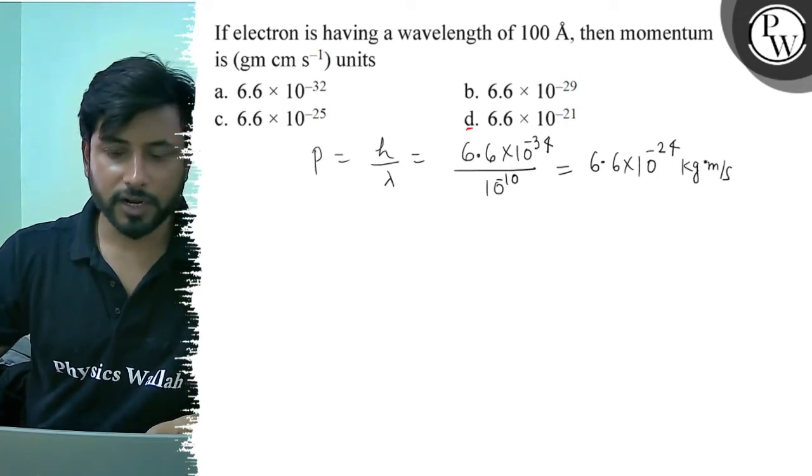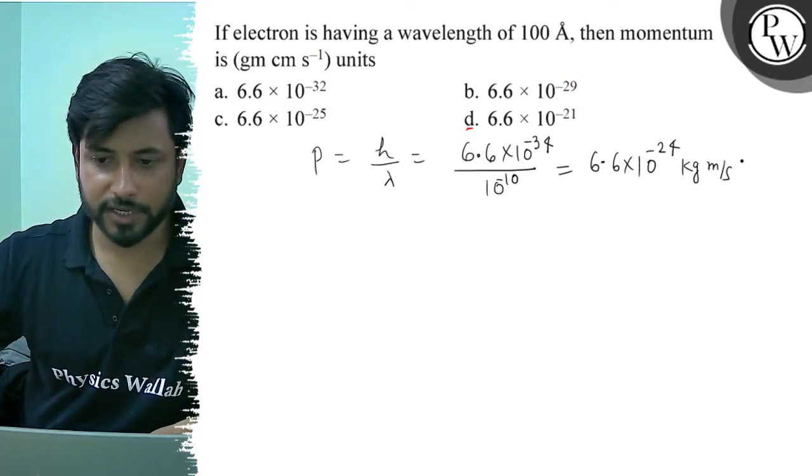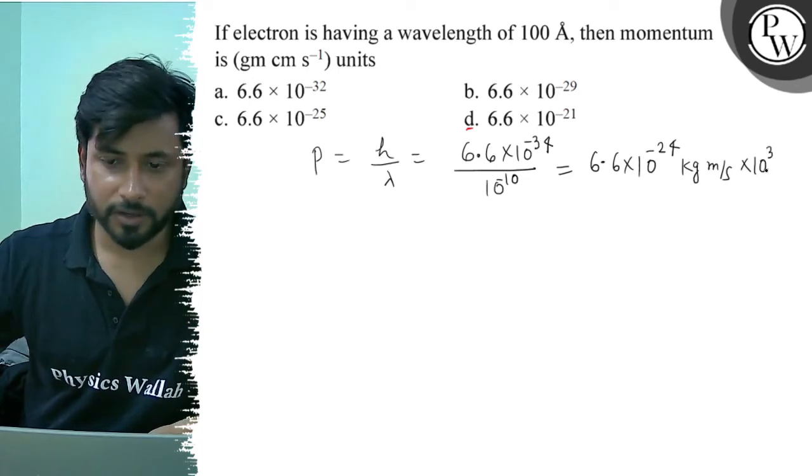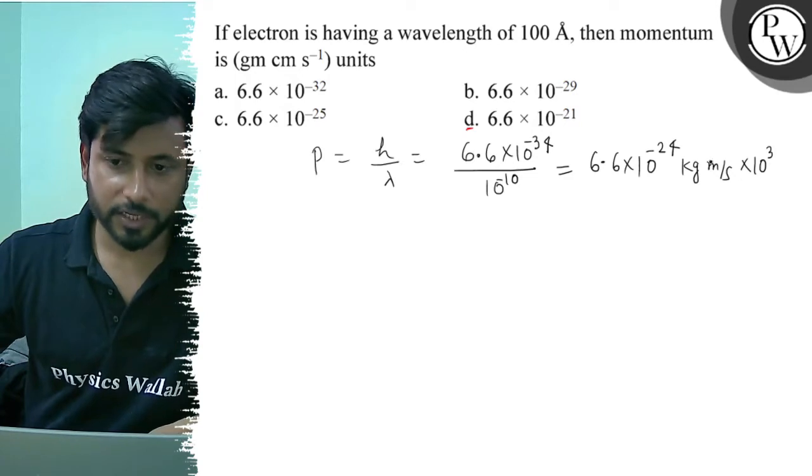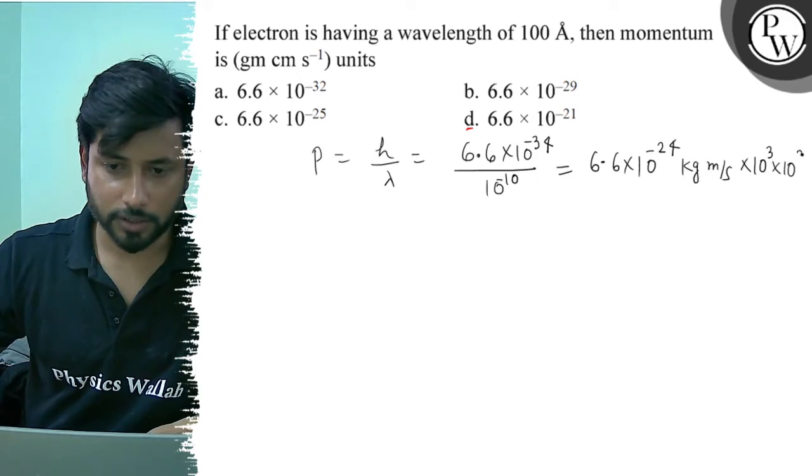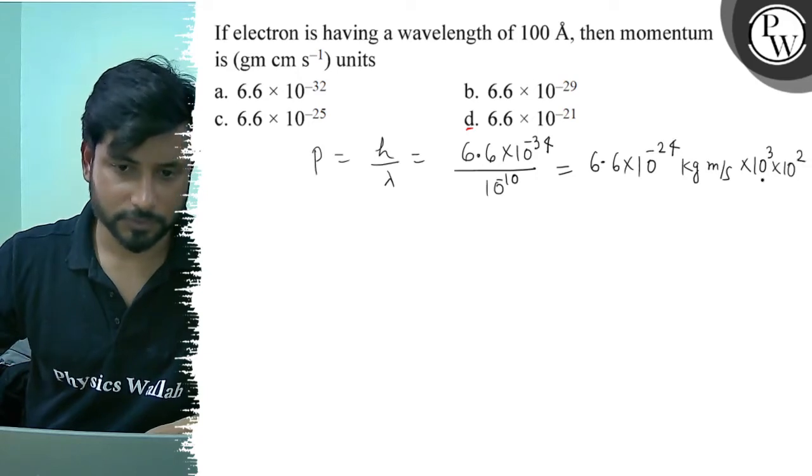So to convert this, what do we need to do? In kg to gram we need to multiply by 10^3. And for meter to centimeter, we need to multiply by 10^2. That's right.